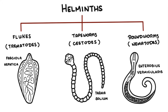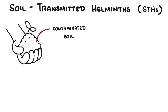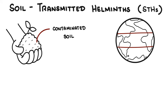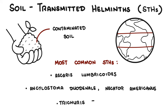Within each of these three groups of helminths, there are those also referred to as soil-transmitted helminths — parasitic worms that infect humans through contaminated soil. These worms are commonly found in areas with poor sanitation and hygiene, especially in tropical and subtropical regions. The most common types include ascaris lumbricoides, hookworms (ancylostoma duodenale and necator americanus), and the whipworm, trichuris trichiura.